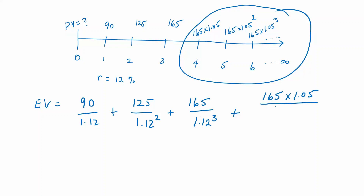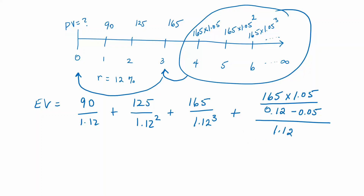I'm going to use the year four free cash flow, divided by R minus G. That's called the terminal value, and it's the value here at date three, but we have to bring that back to date zero — so we divide by one plus the rate raised to the three.